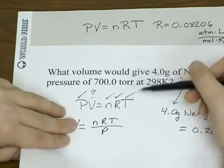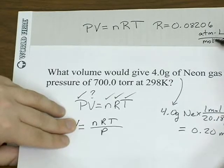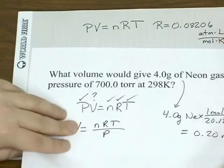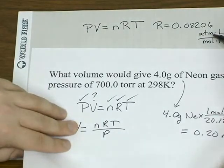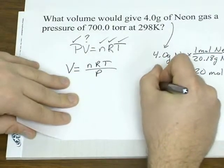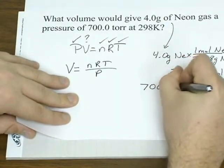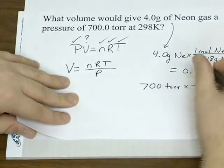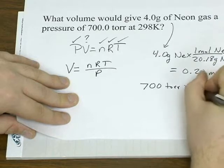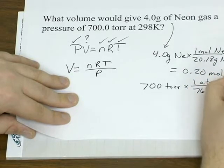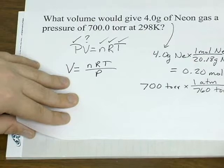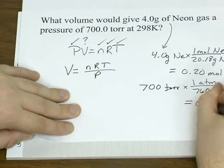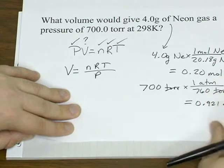We are given a temperature in kelvin and the amount in moles. But the pressure is given in torr, and the gas constant is in atmospheres. That's another conversion we need to do before plugging it into our ideal gas law. We convert torr to atmospheres: the conversion factor is 1 atmosphere equals 760 torr. So that's 0.921 atmospheres.